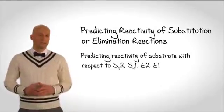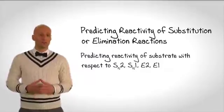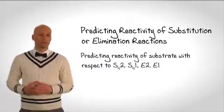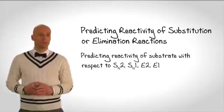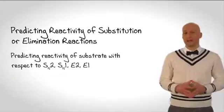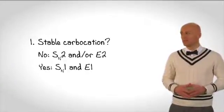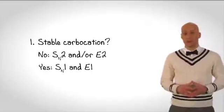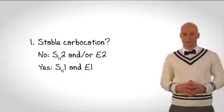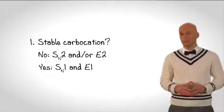If you ask yourself a series of four simple yes-no questions, you will be able to answer every question related to SN1, SN2, E1, and E2 on test day. The first question to ask is will my substrate form a stable carbocation? If the answer to that question is no, then you must consider SN2 and E2 reaction mechanisms. If the answer is yes, then you should consider SN1 and E1.